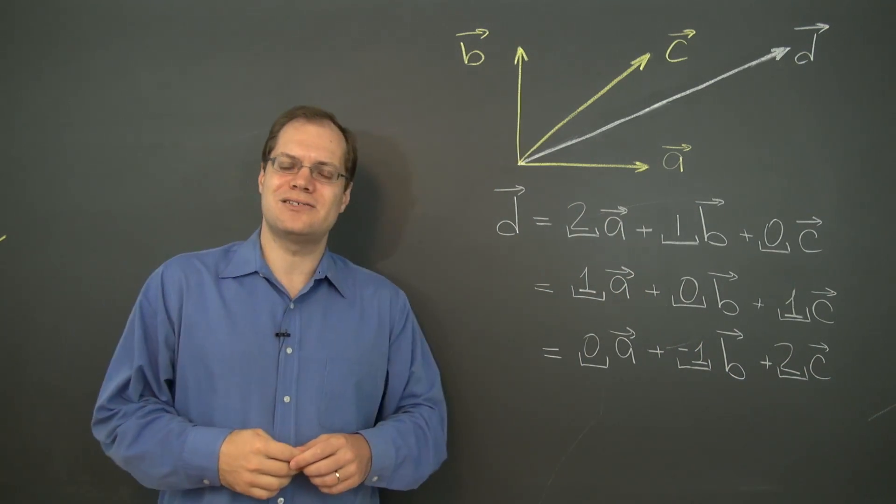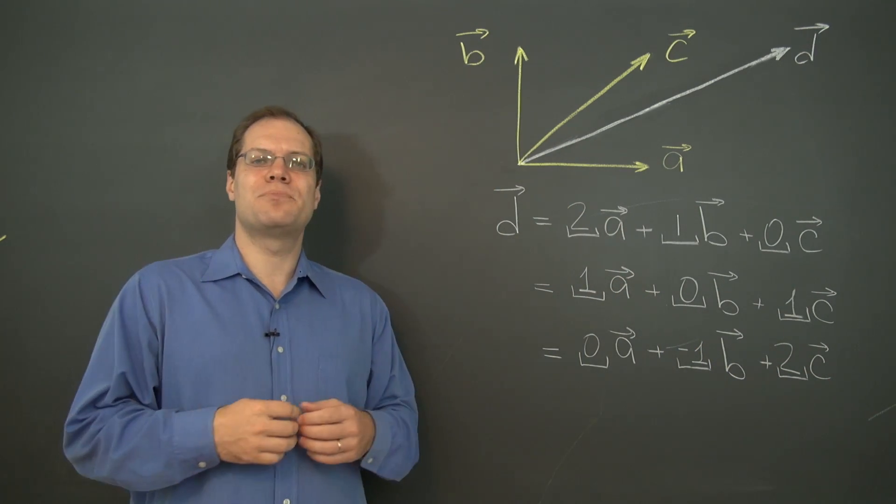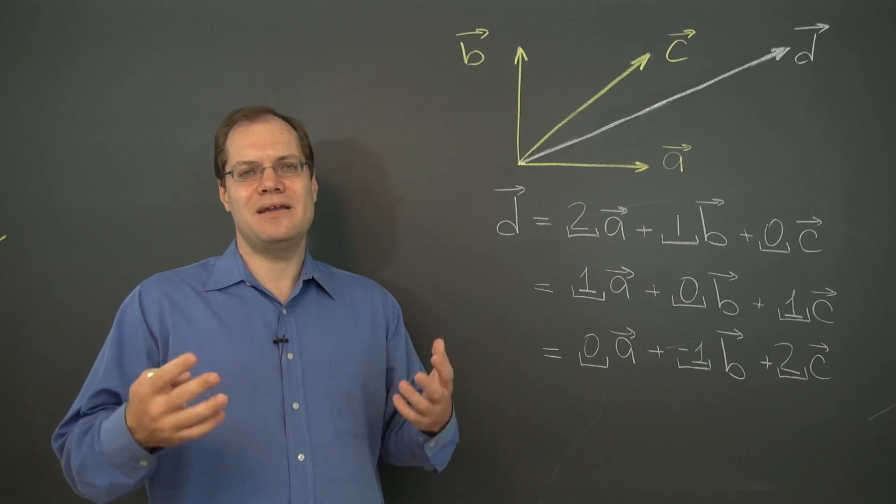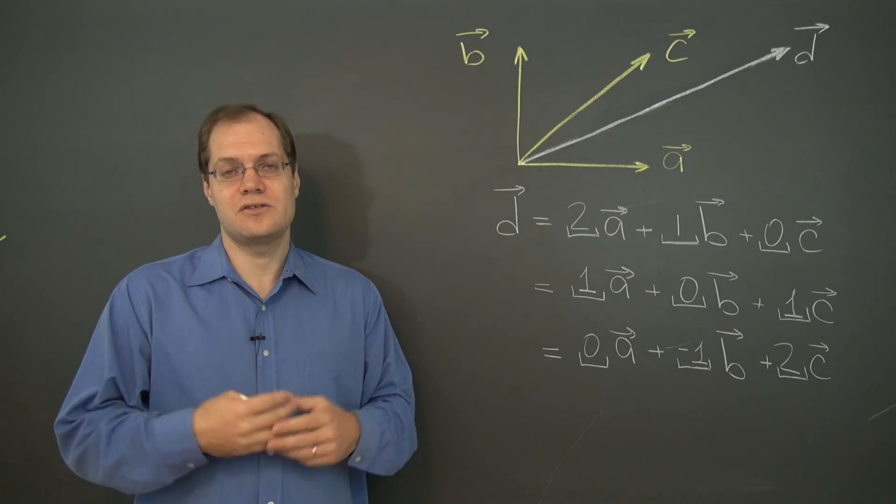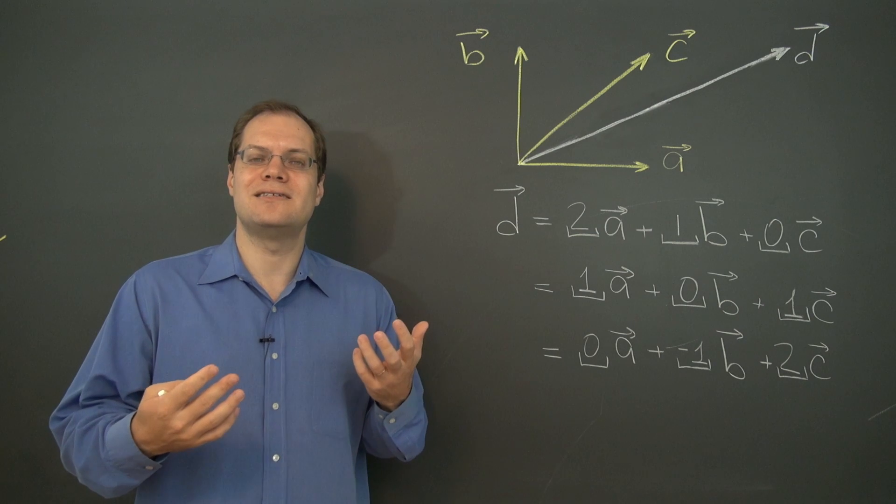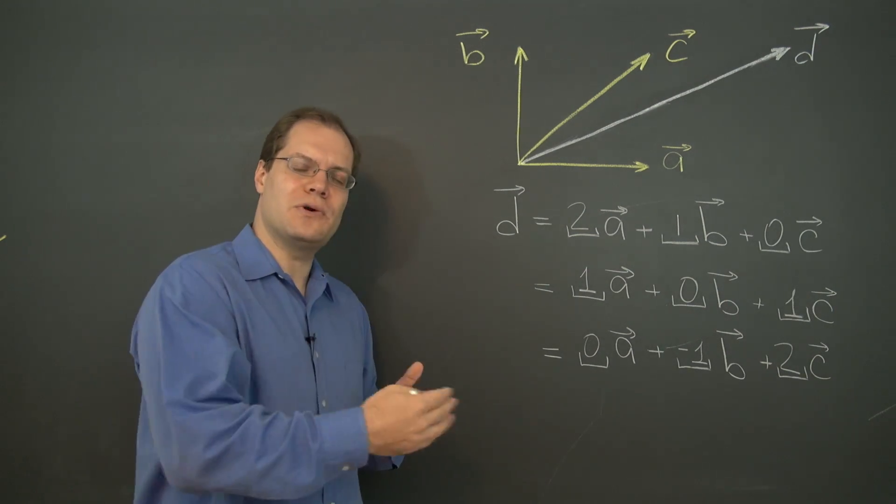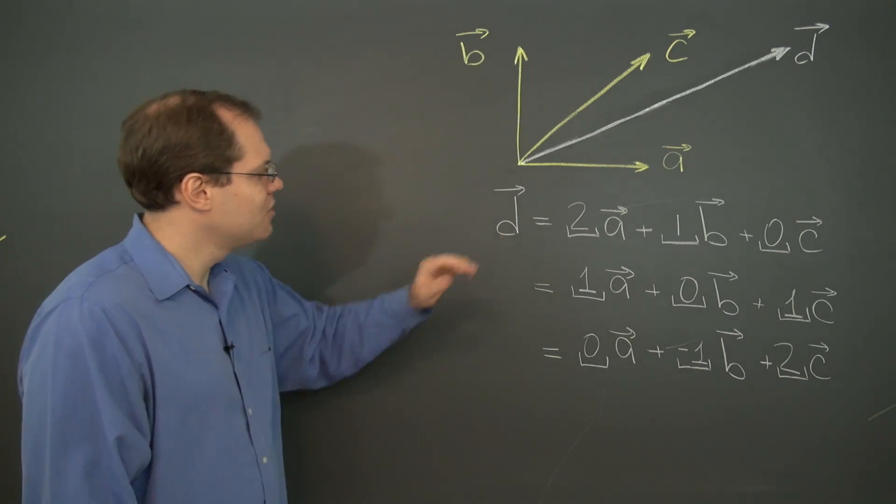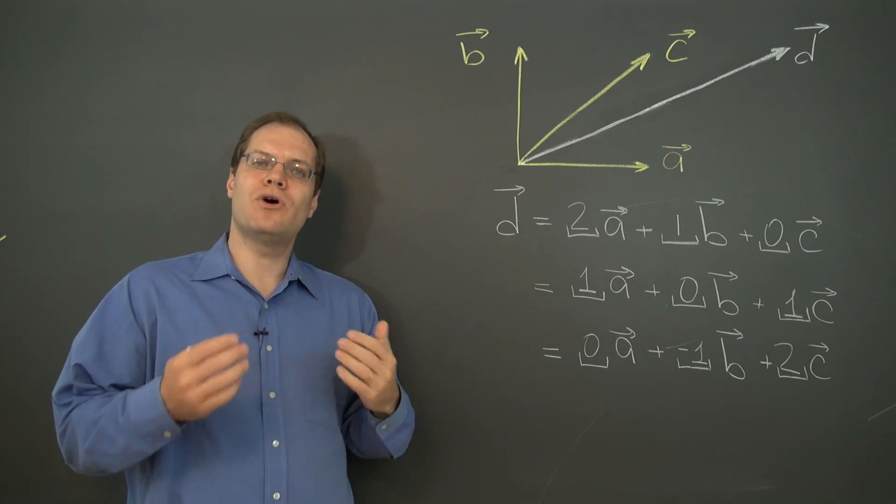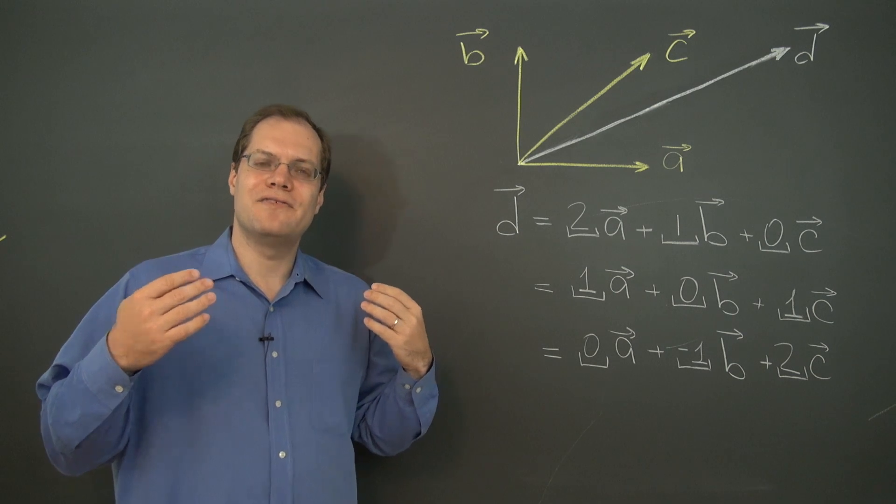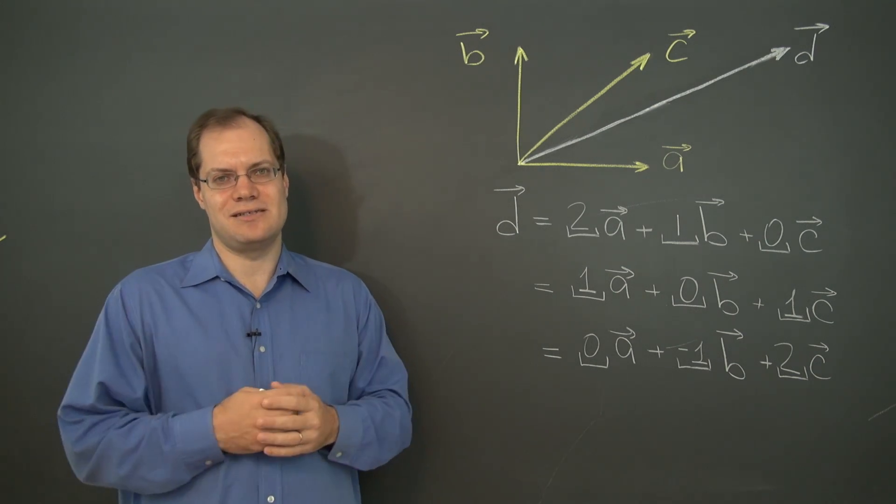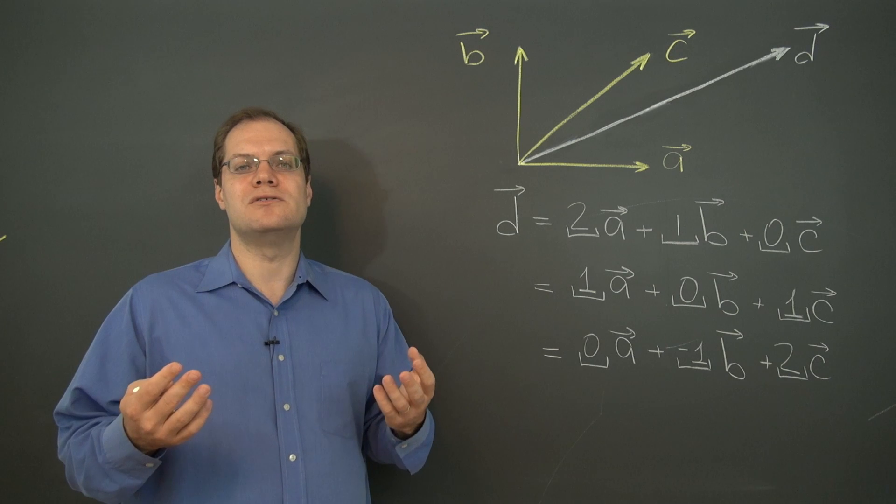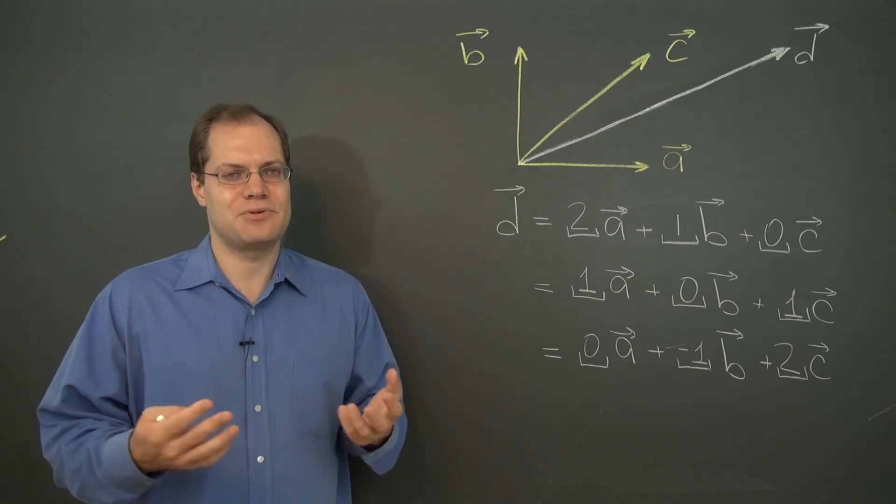And you can probably guess, or you're beginning to see, that there are probably infinitely many ways of doing this. So why? Why is it that before there was only one way to find decomposition, or maybe none, and now there are perhaps infinitely many? What is it about the vectors a, b, and c that causes this? Can you put it in words, or as a mathematical expression?